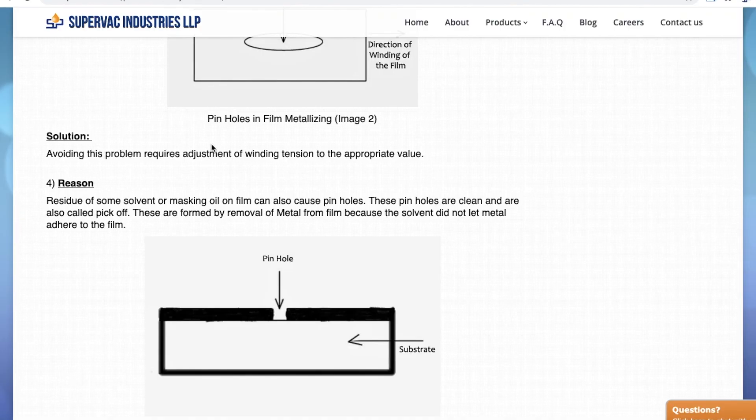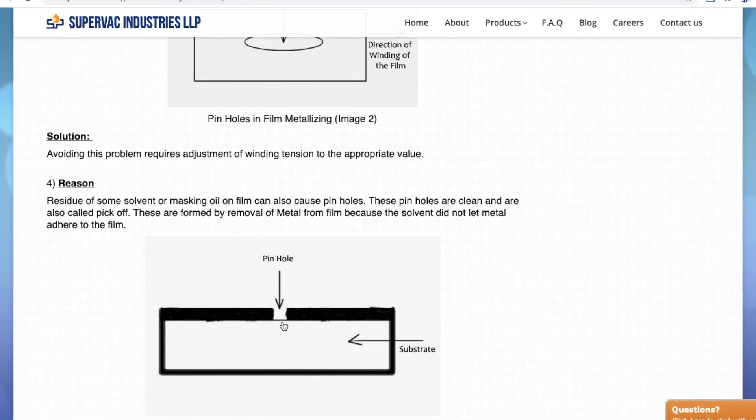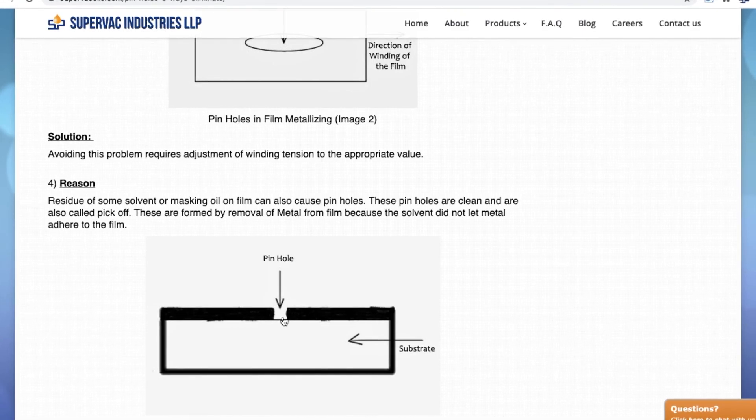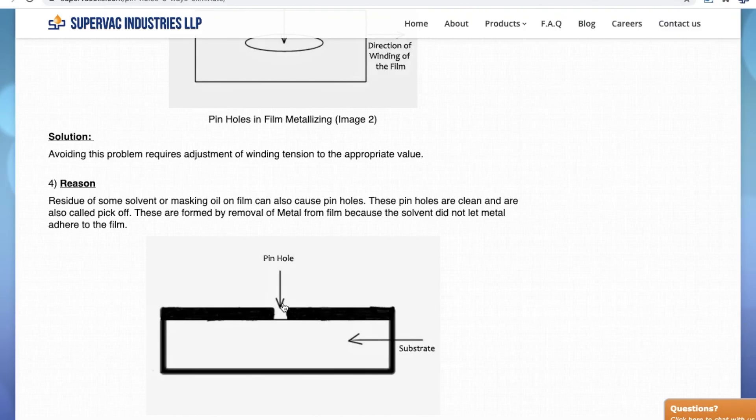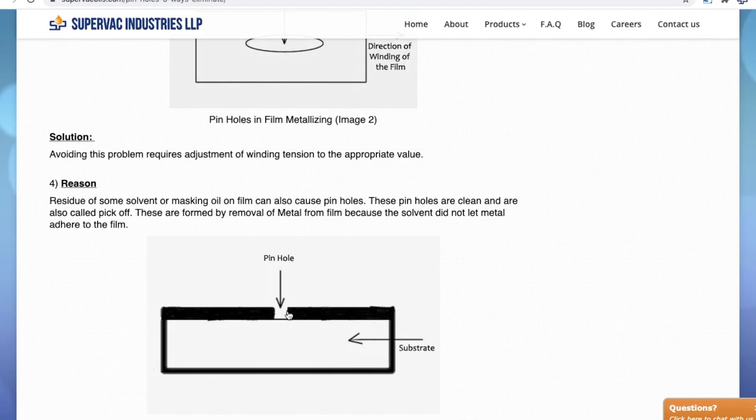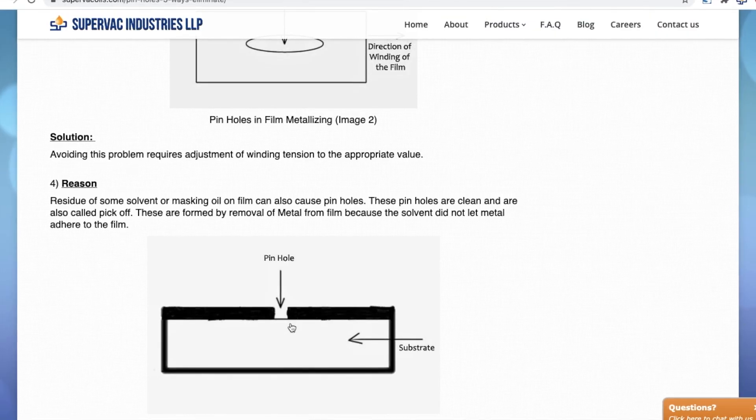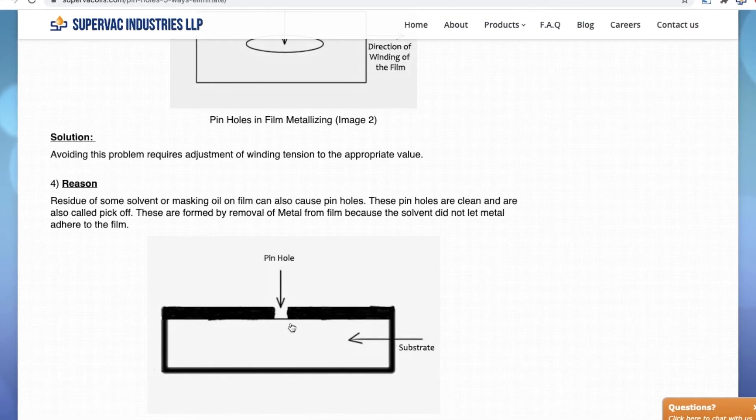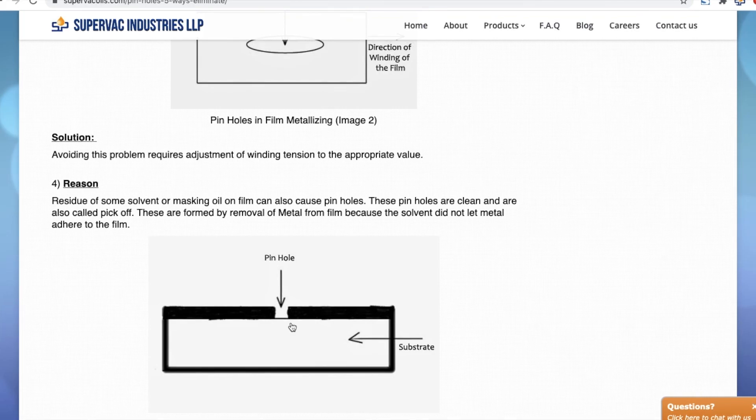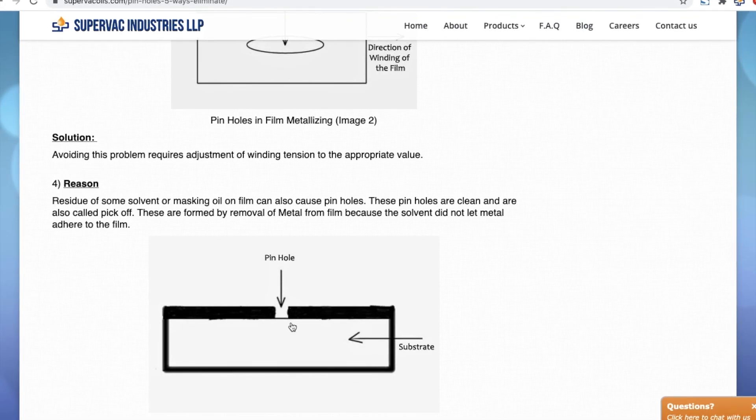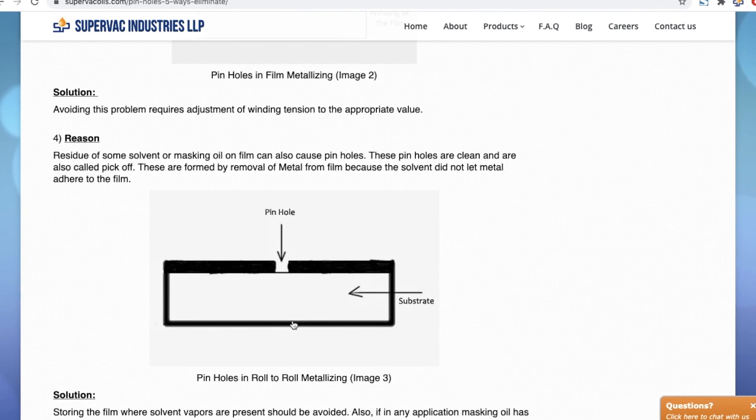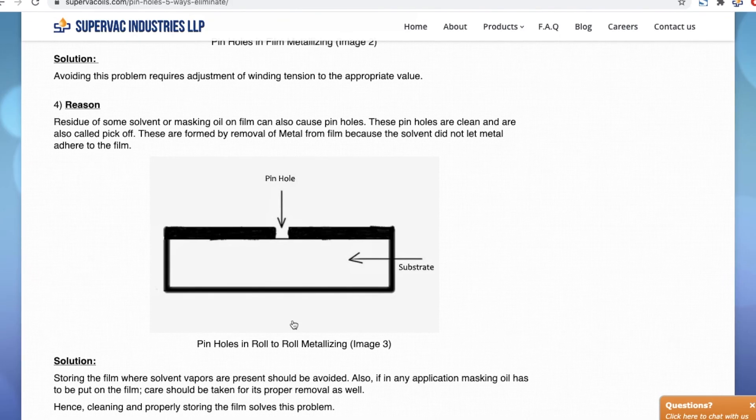Another reason of pinholes is some kind of solvent or masking oil on the substrate. This solvent or masking oil will not let the metal stick over here and we will have a pick off and a pinhole. This can be very easily identified because it has very clean straight surface. If solvent is causing the problem, we can sort this out by storing the film in a place where there are no or less solvent fumes. If masking oil has been applied for some reason, that masking oil must be cleaned before metallizing begins. If the film is dirty, we may have to go for cleaning of the film.